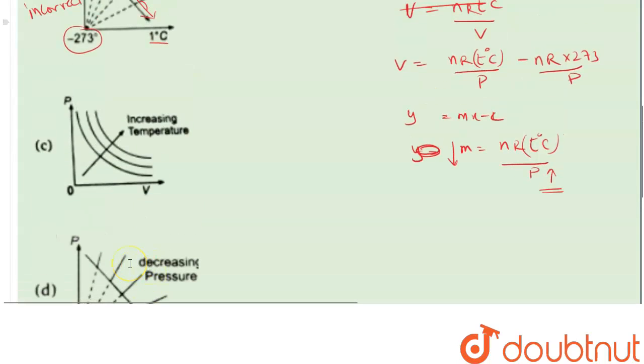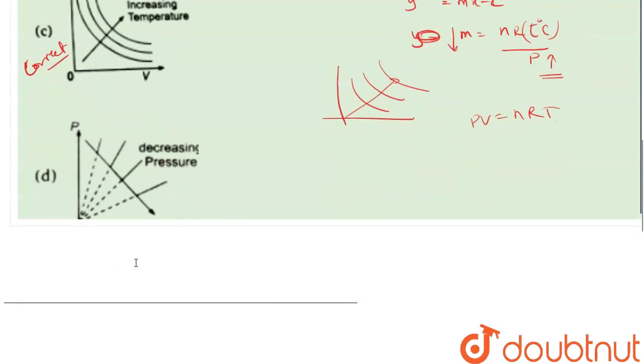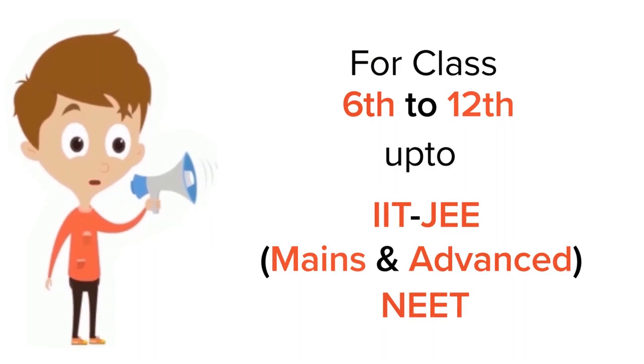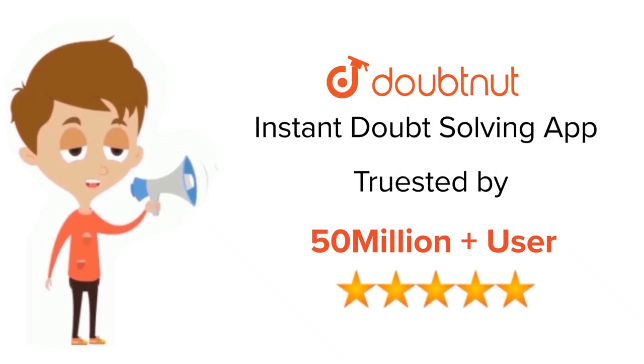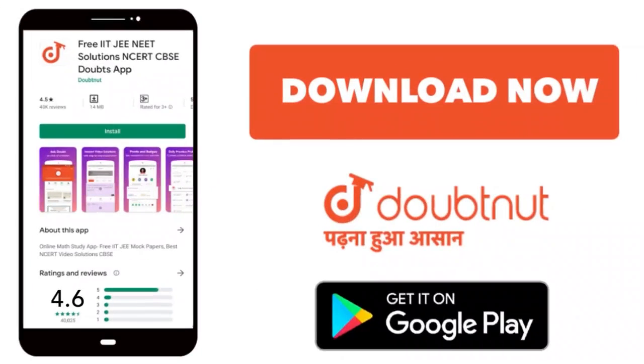Now what about C? If this is PV curve, PV equals nRT, so your temperature will increase, your slope will also increase. This is correct. Thank you. For class 6-12, IIT-JEE and NEET level, trusted by more than 5 crore students, download Doubtnet app today.